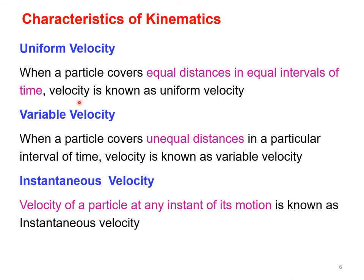Velocity can be categorized into three types. Uniform velocity: the particle covers equal distances in equal intervals of time — for example, traveling 1 meter in 10 seconds and 1 meter in the next 10 seconds. Variable velocity (also called non-uniform velocity): the particle covers unequal distances in a particular interval of time. Instantaneous velocity: the velocity measured at any instant of motion.